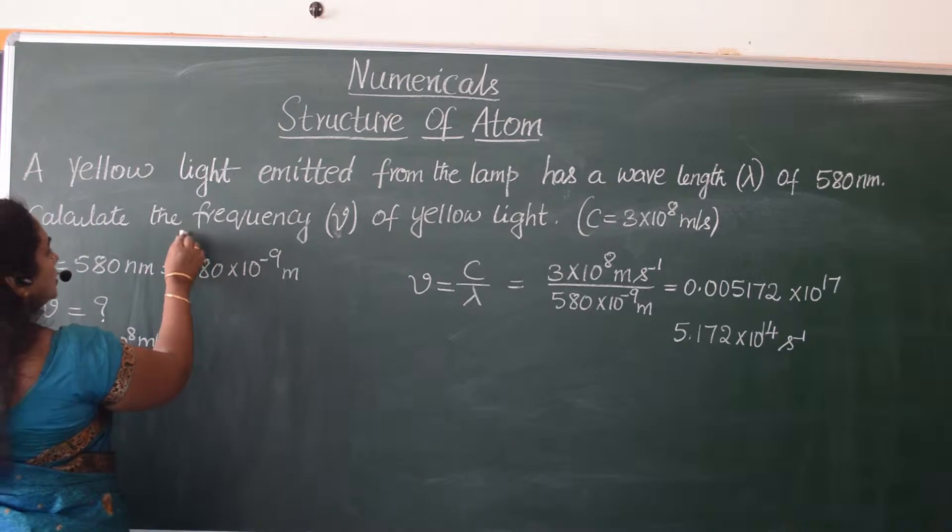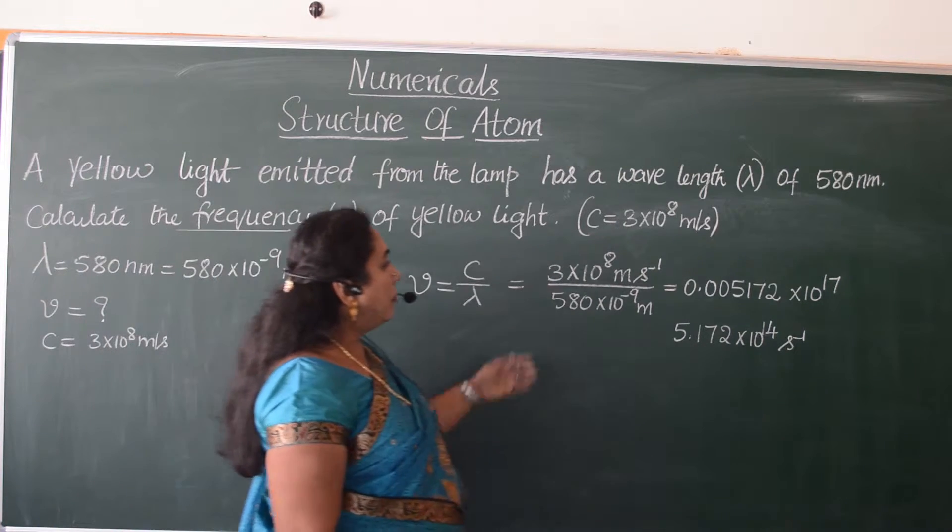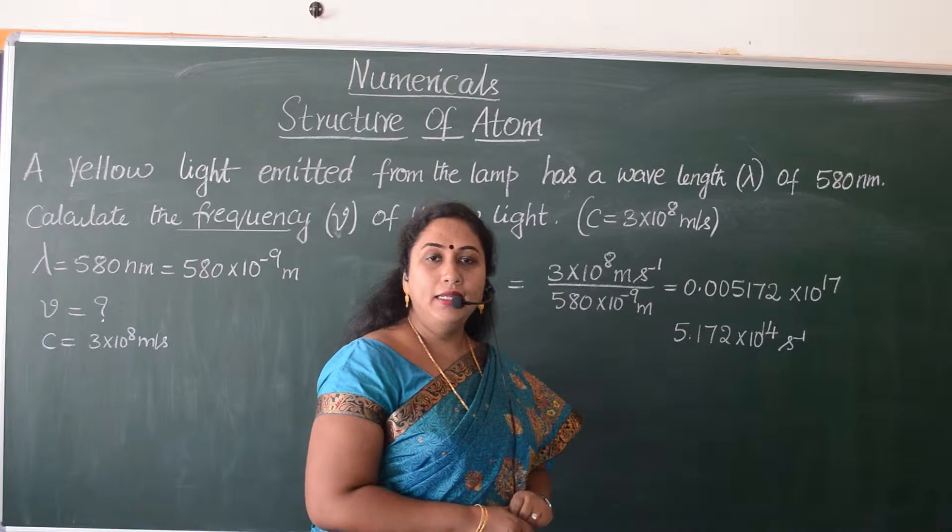What are we supposed to find out? We are supposed to calculate the frequency of yellow light. In this problem they have given you the value of C. Even if they have not given you the value of C, it is a constant value.